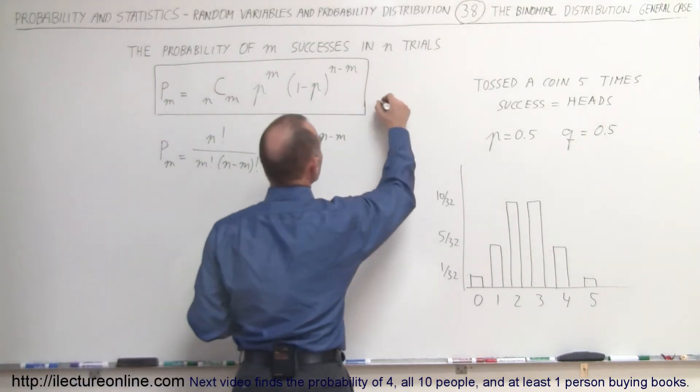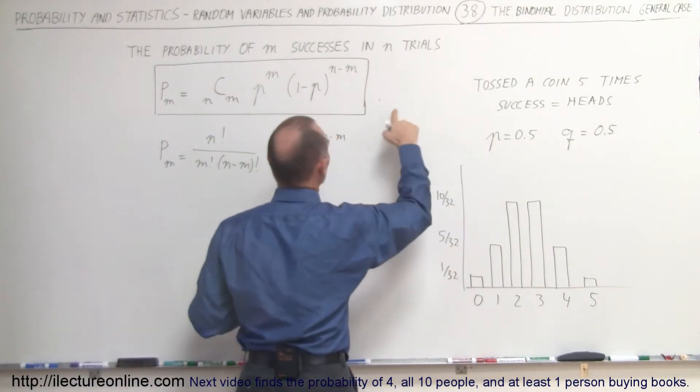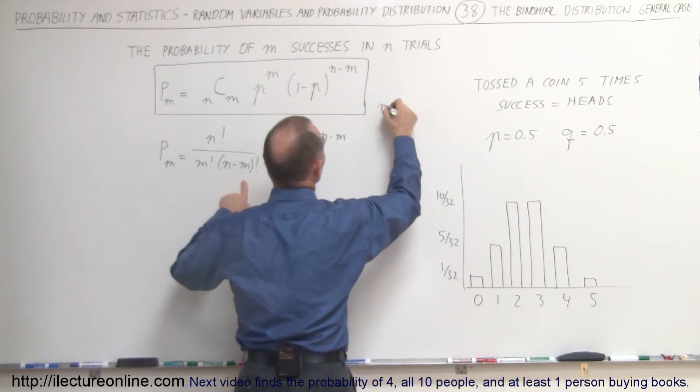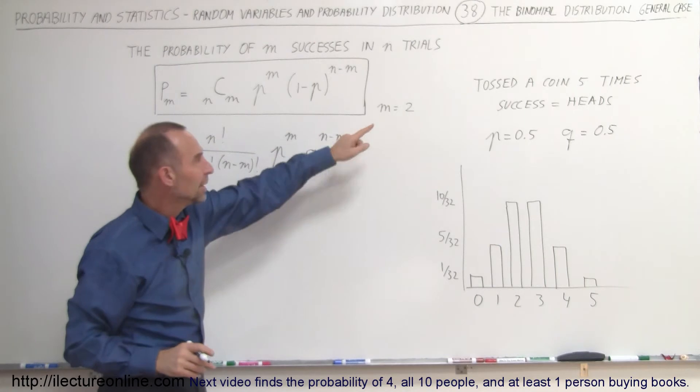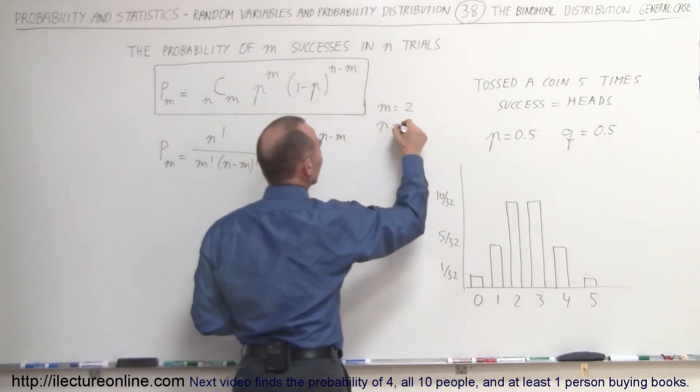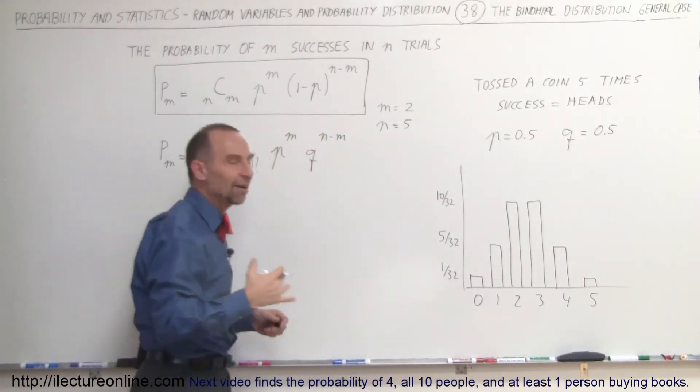Here we can see that P is 0.5, Q is 0.5. In this case M would be two, so we're looking for M equals two, and then N is equal to five because we did a total of five trials.